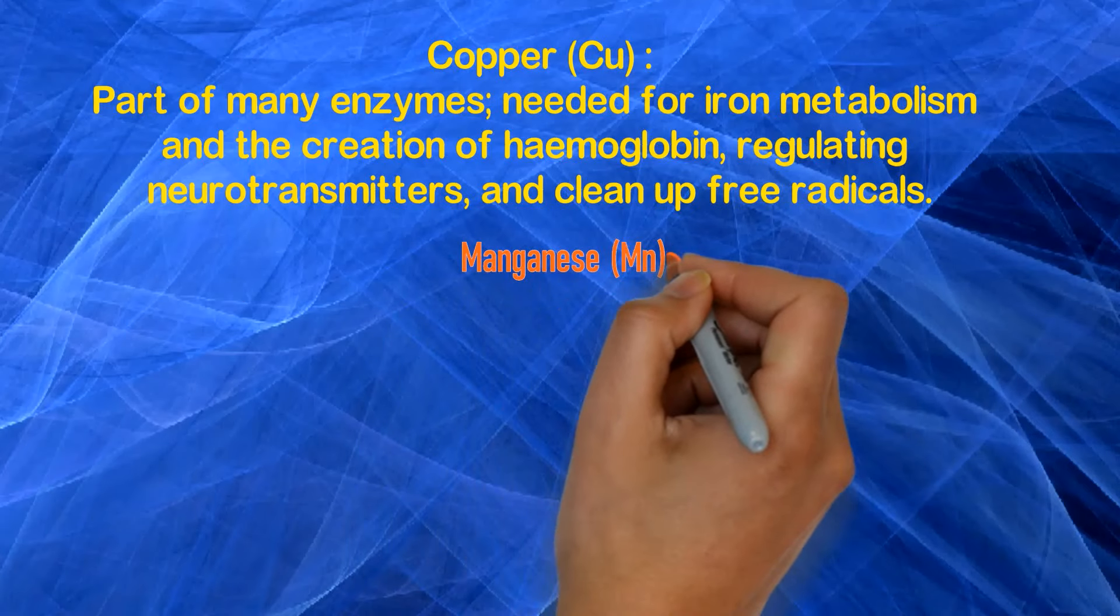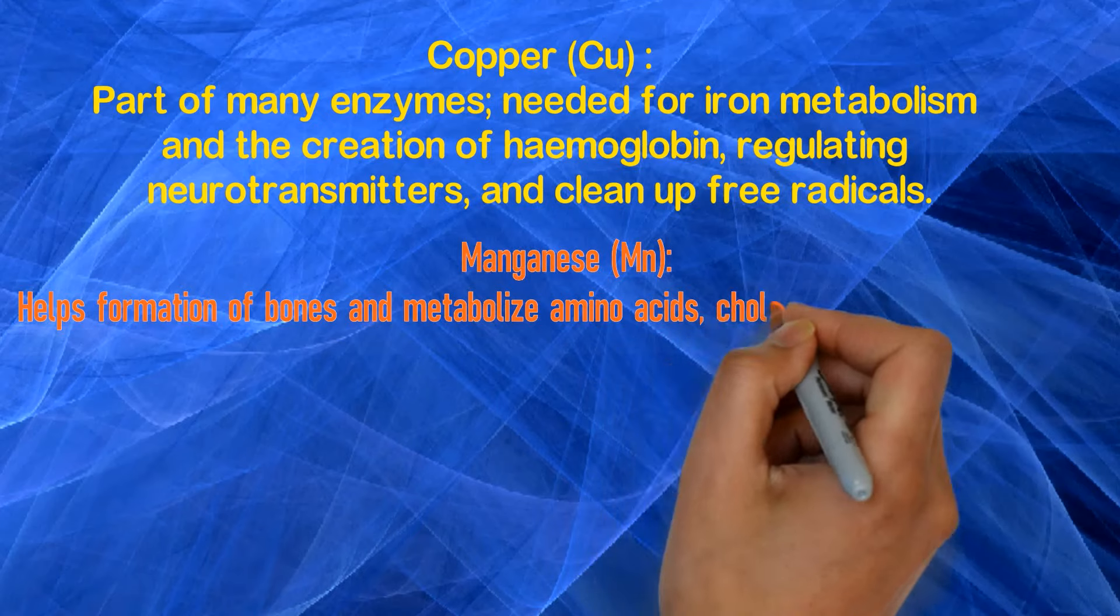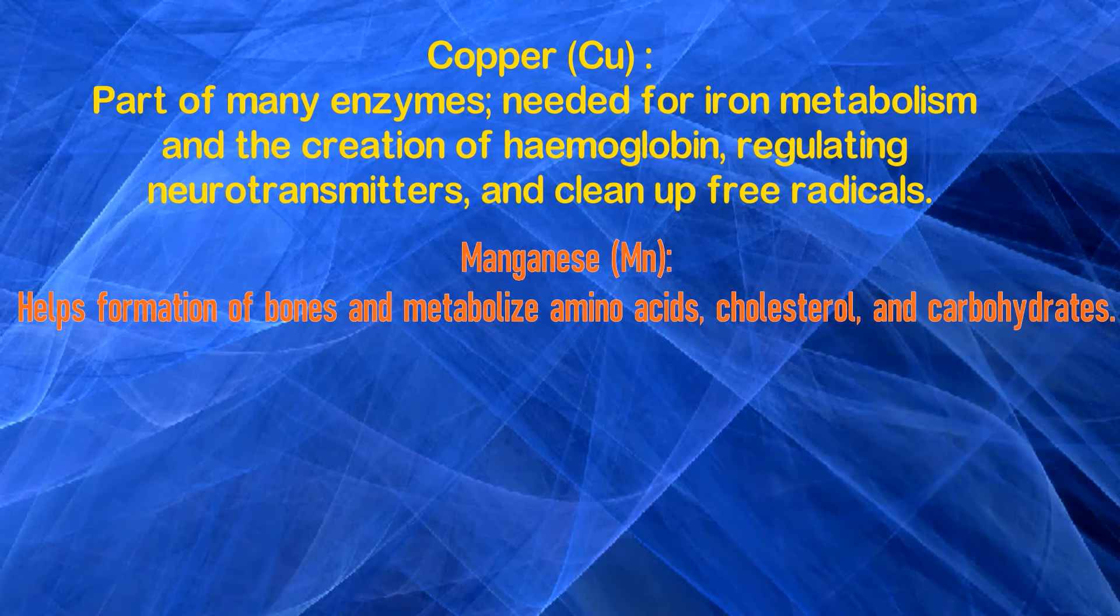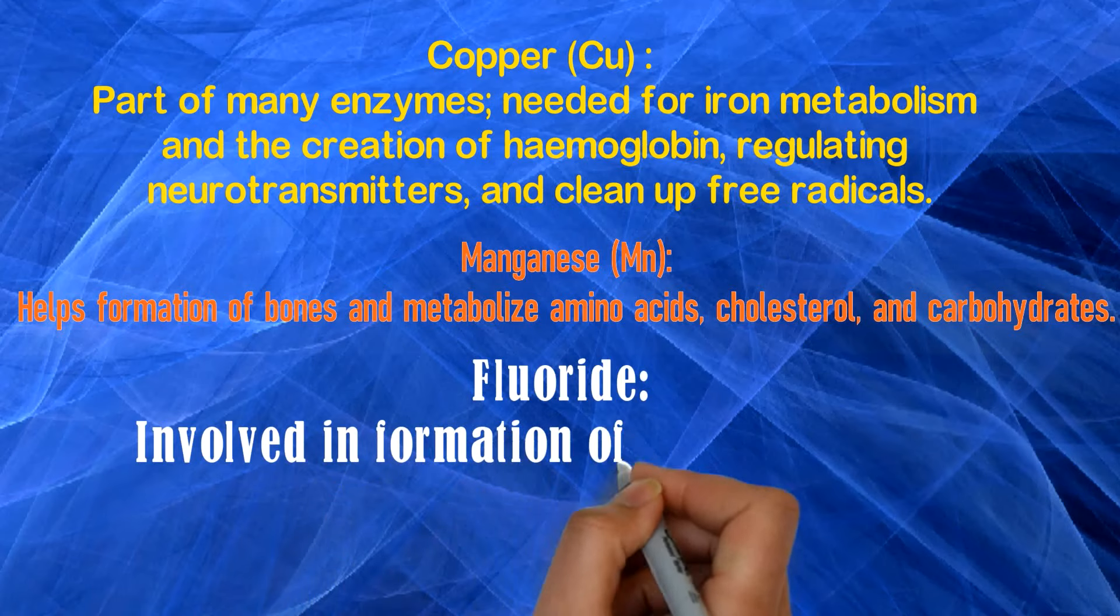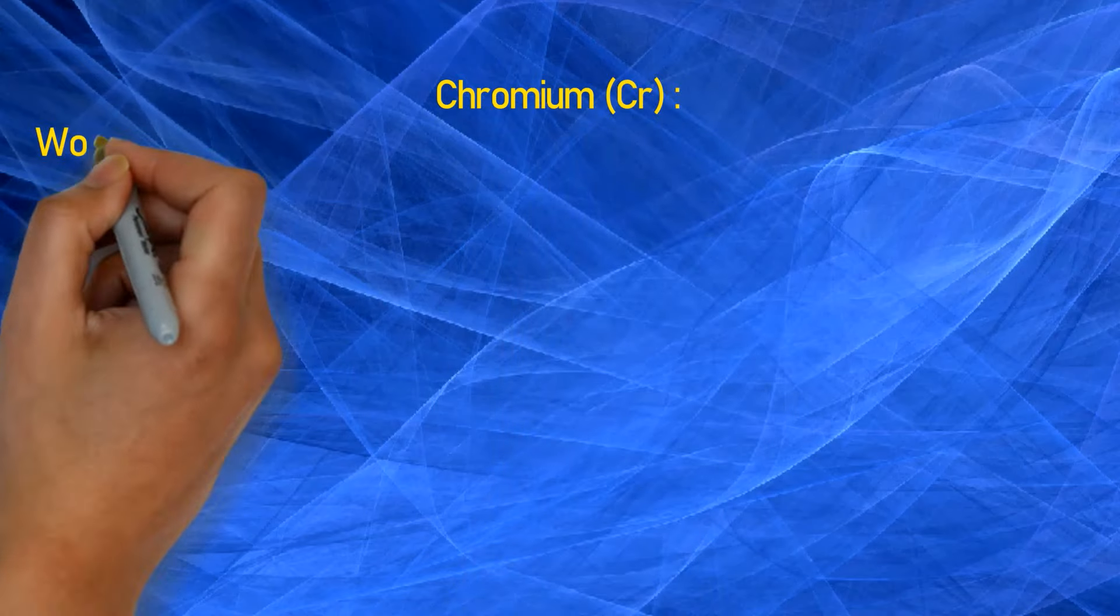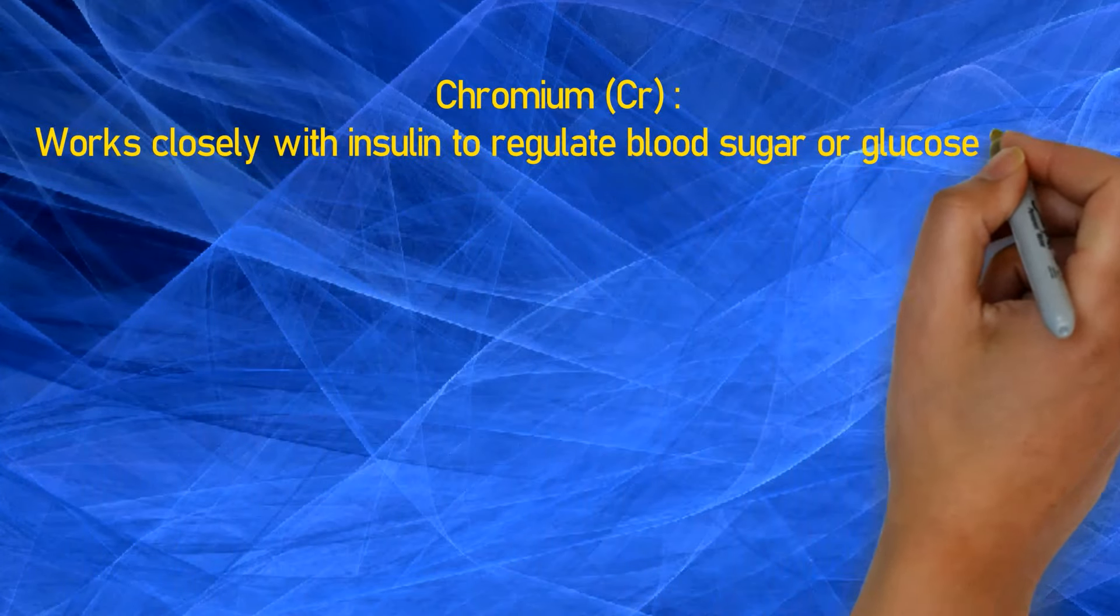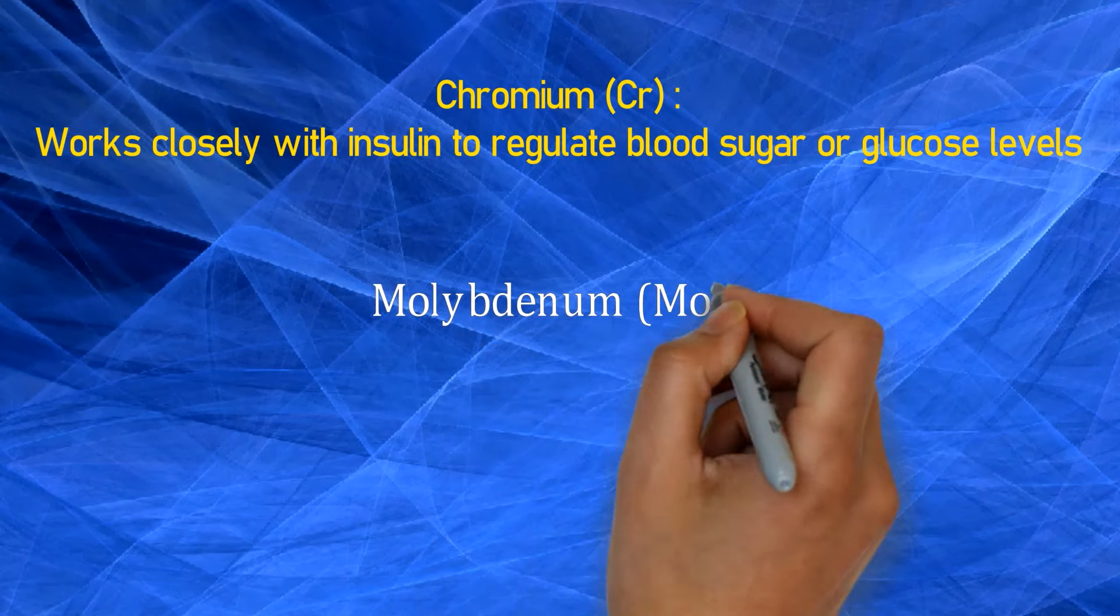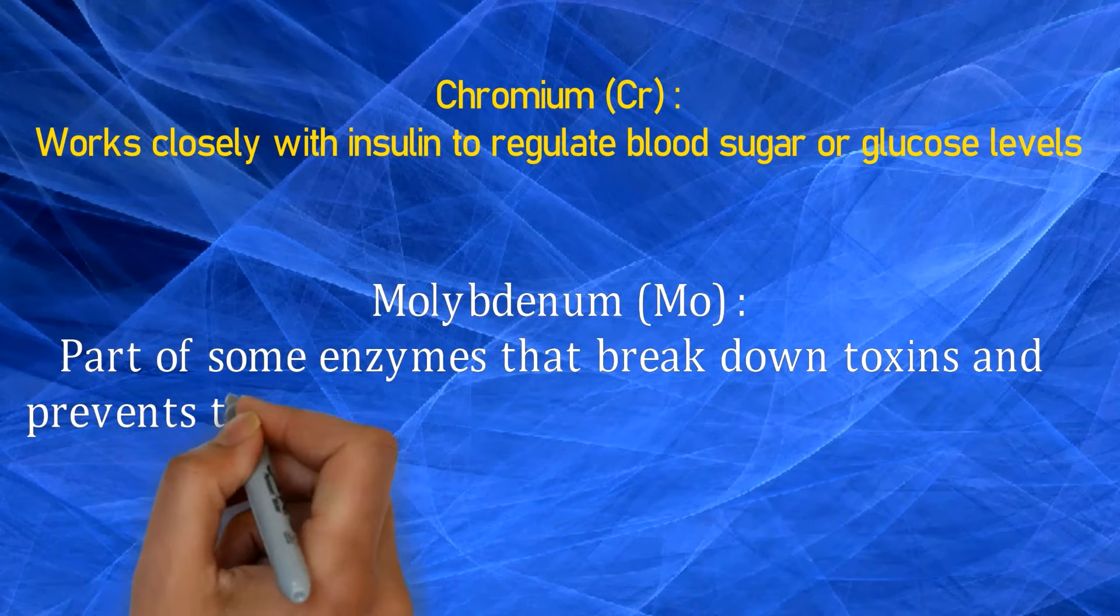Manganese helps formation of bones and metabolizes amino acids, cholesterol and carbohydrates. Fluoride: involved in formation of bones and teeth, helps prevent tooth decay. Chromium works closely with insulin to regulate blood sugar or glucose levels. Molybdenum: part of some enzymes that break down toxins and prevents the build up of harmful sulfites in the body.